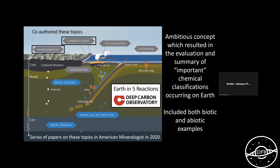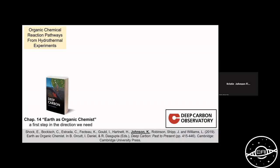There's been different approaches in trying to sort through the organic chemistry that's available on Earth. The first thing I'll bring to your attention is this series of workshops and discussions called Earth in Five Reactions, which was one of the different projects encouraged and facilitated by the Deep Carbon Observatory Grant. In the Earth in Five Reactions framework, there were certain types of reactions highlighted that are either organic or mineral related. It is itself an ambitious concept which resulted in the evaluation and summary of important chemical classifications occurring on Earth.